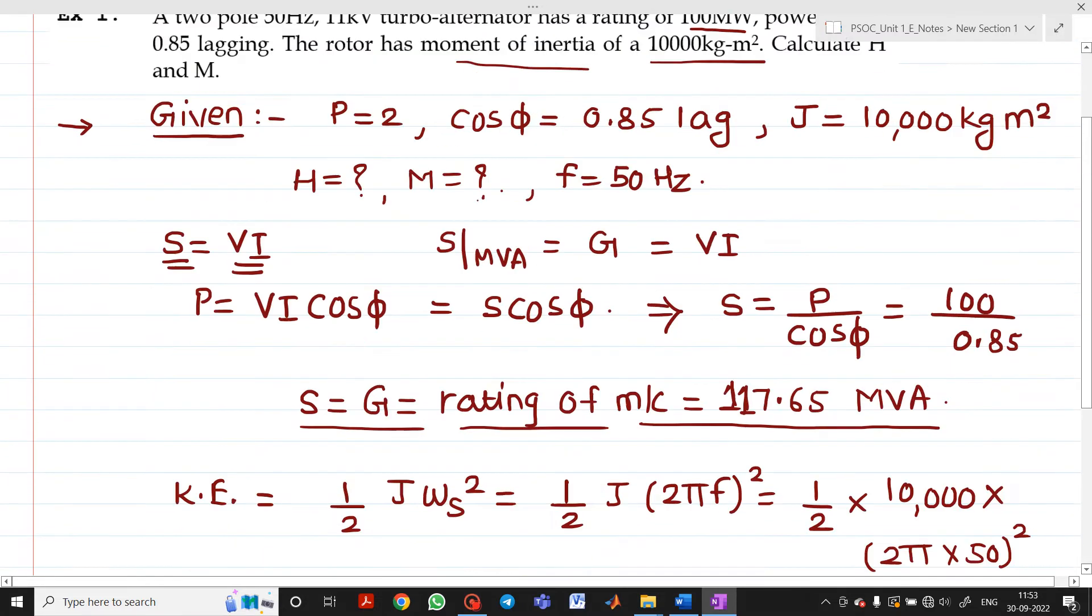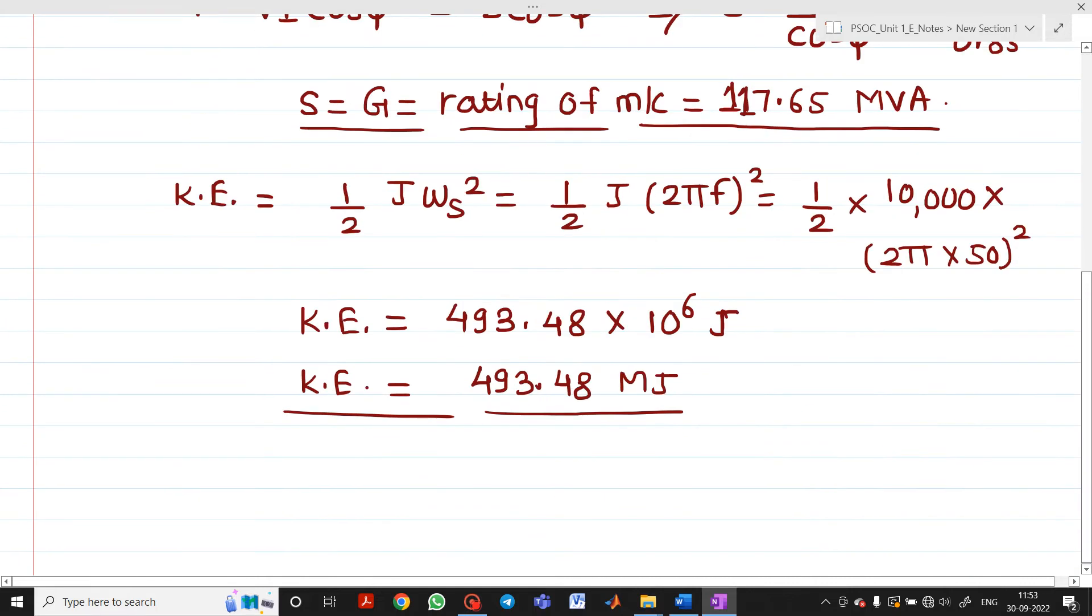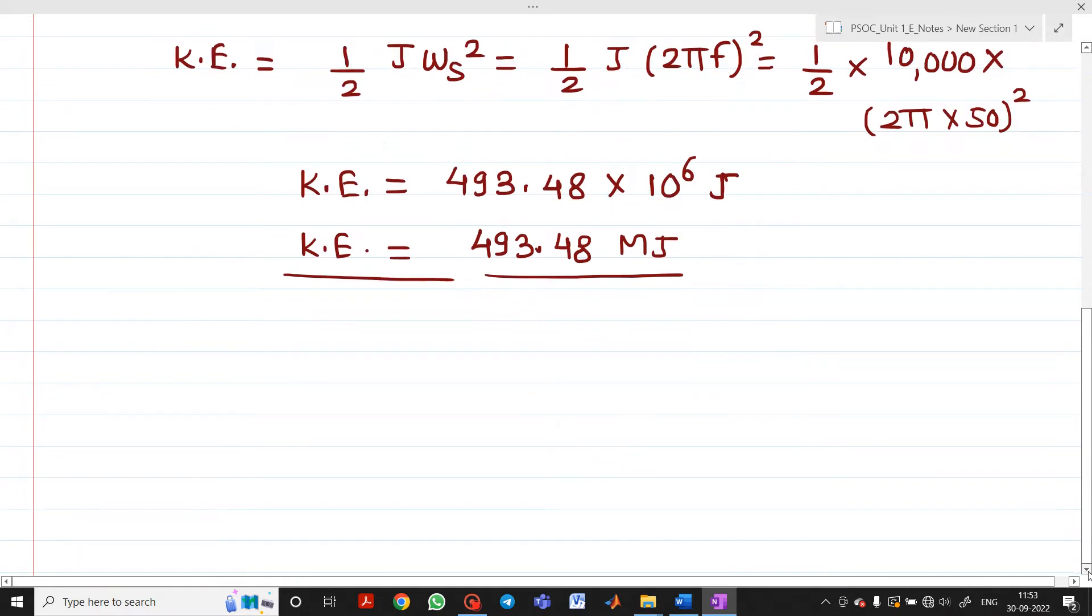We need to find the value of H and M. The formula for H is kinetic energy equals G times H. So H equals kinetic energy divided by G.